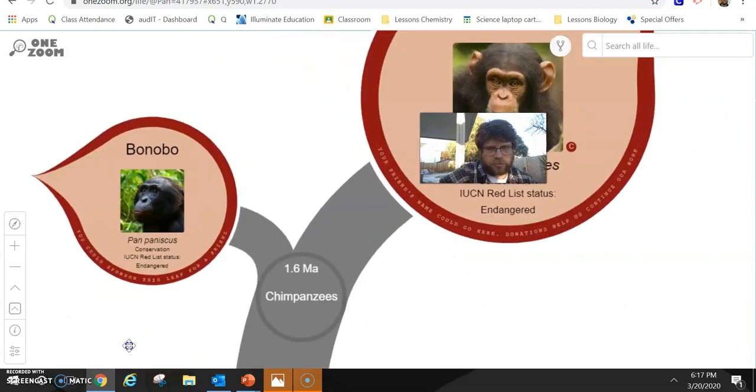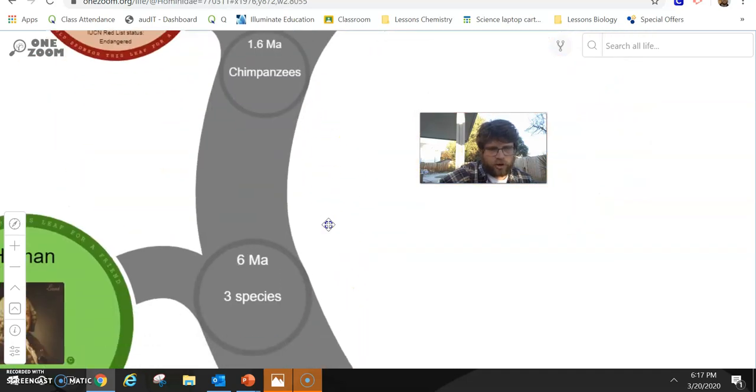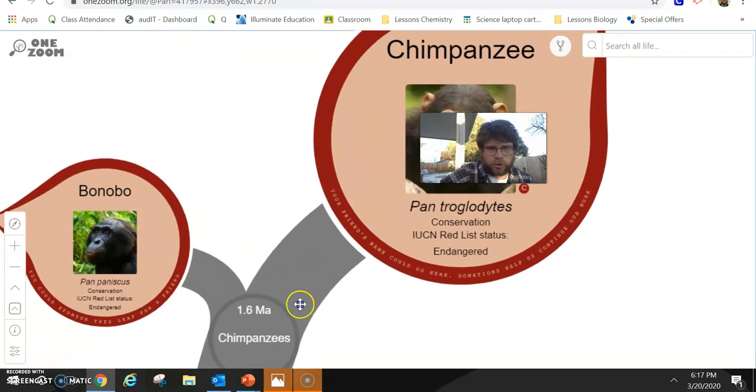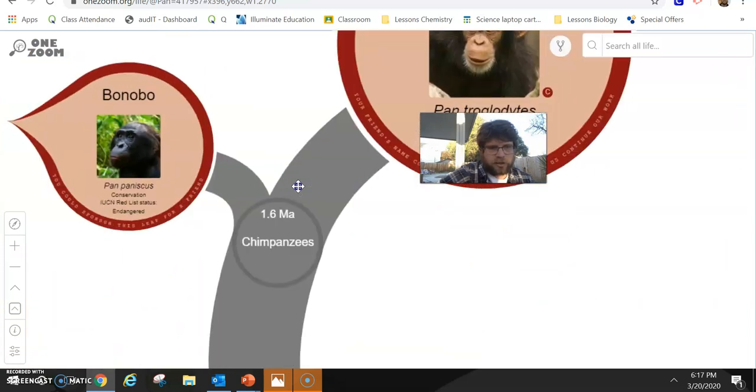Billions, in fact. But our nearest ancestors, or our nearest relatives that share a very recent common ancestor six million years ago. Bonobos and chimpanzees. They are endangered.